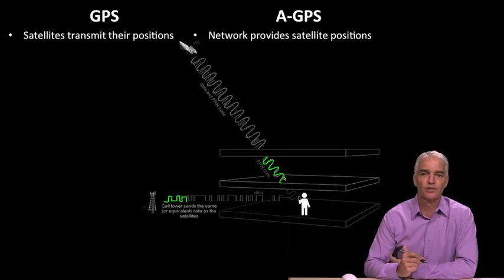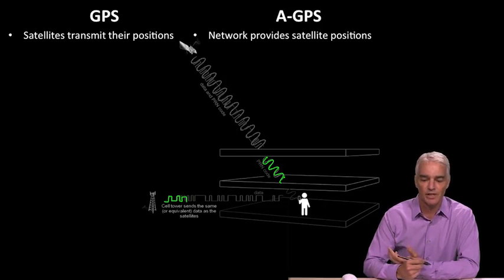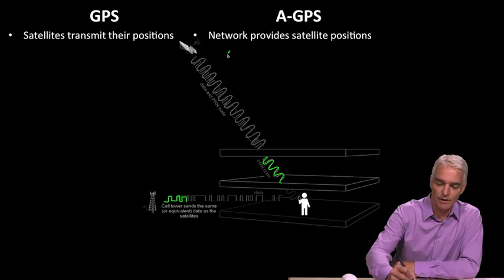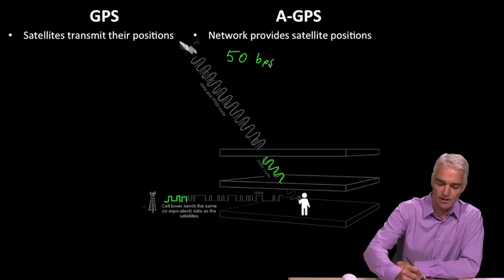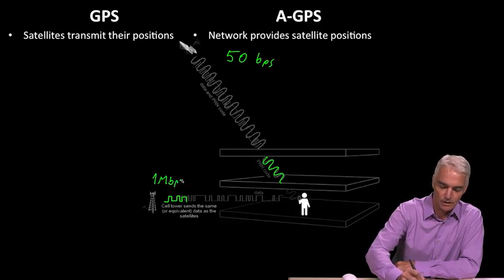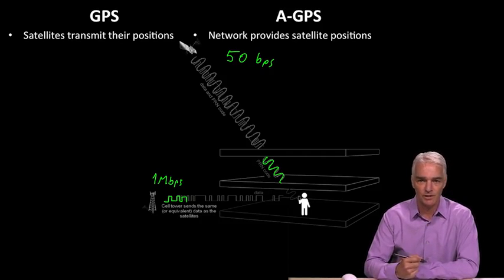And so the first thing that you'll notice is that if the data comes over a network and your network is a very fast data link, which it typically is for a cell phone, you can get the data much quicker than you can get it from the satellite. Remember, the satellite transmits data at a very leisurely 50 bits per second, and a cell tower is going to transmit data at something like a megabit per second. So you get that data much faster or even in advance of using your GPS. And so it saves the receiver the bother of decoding the data.